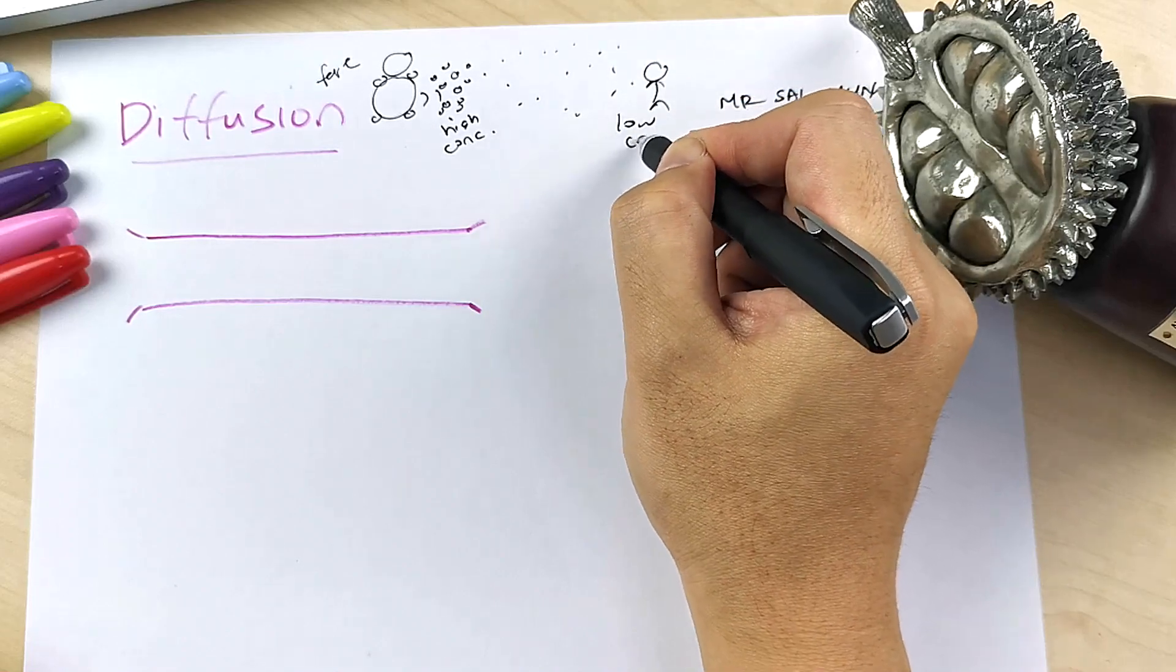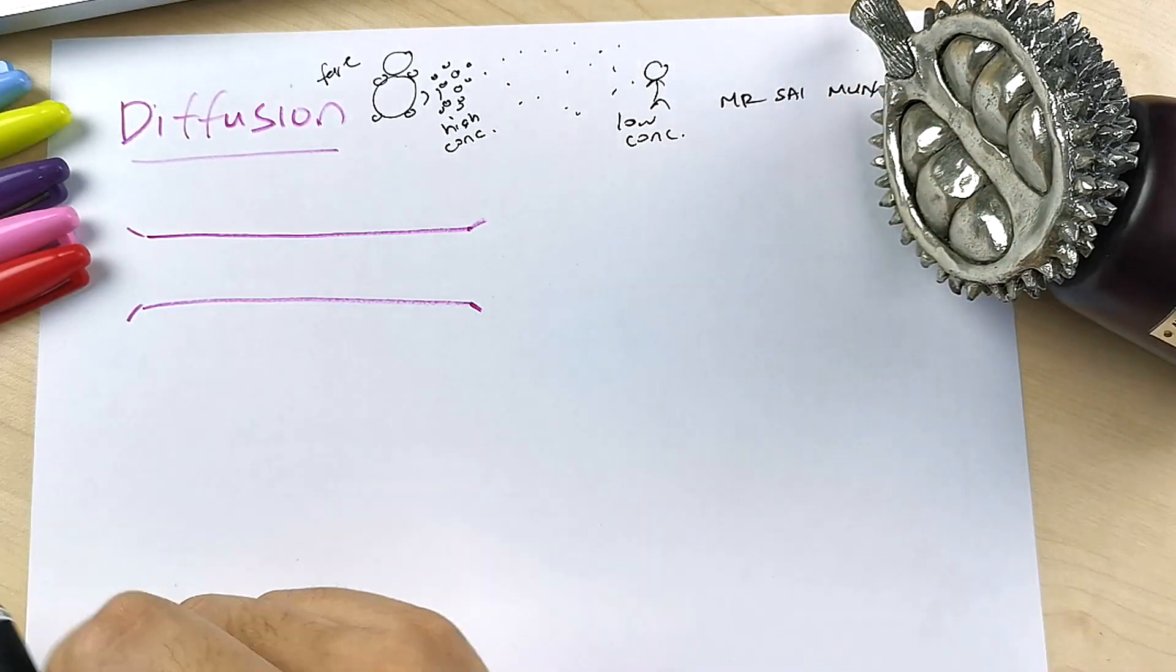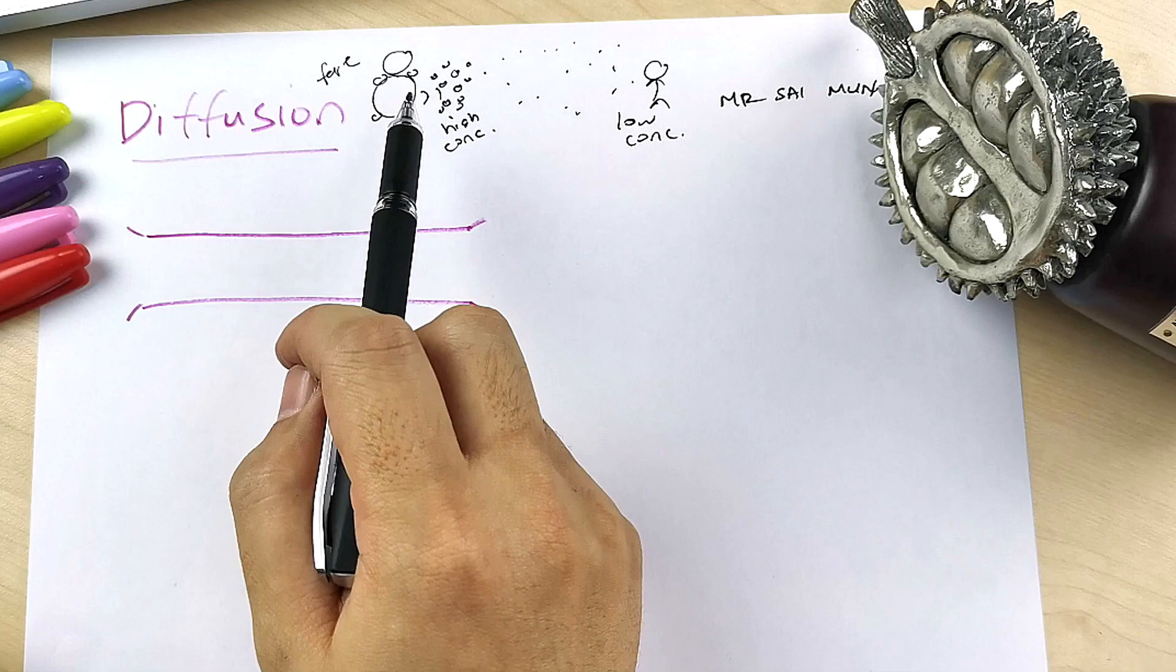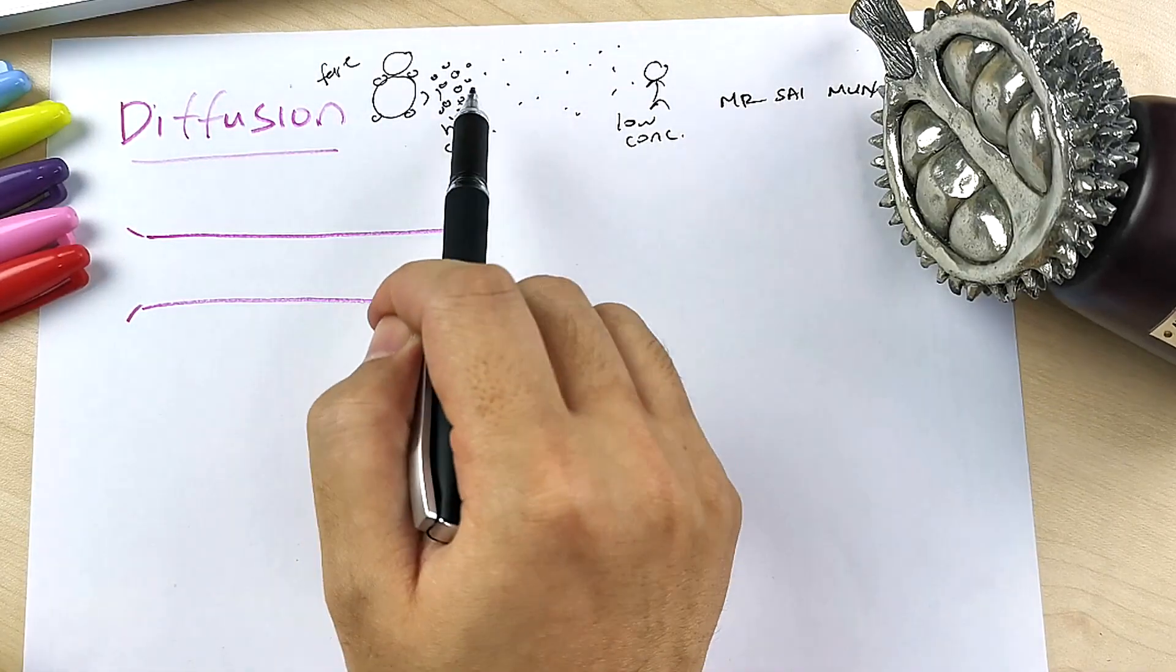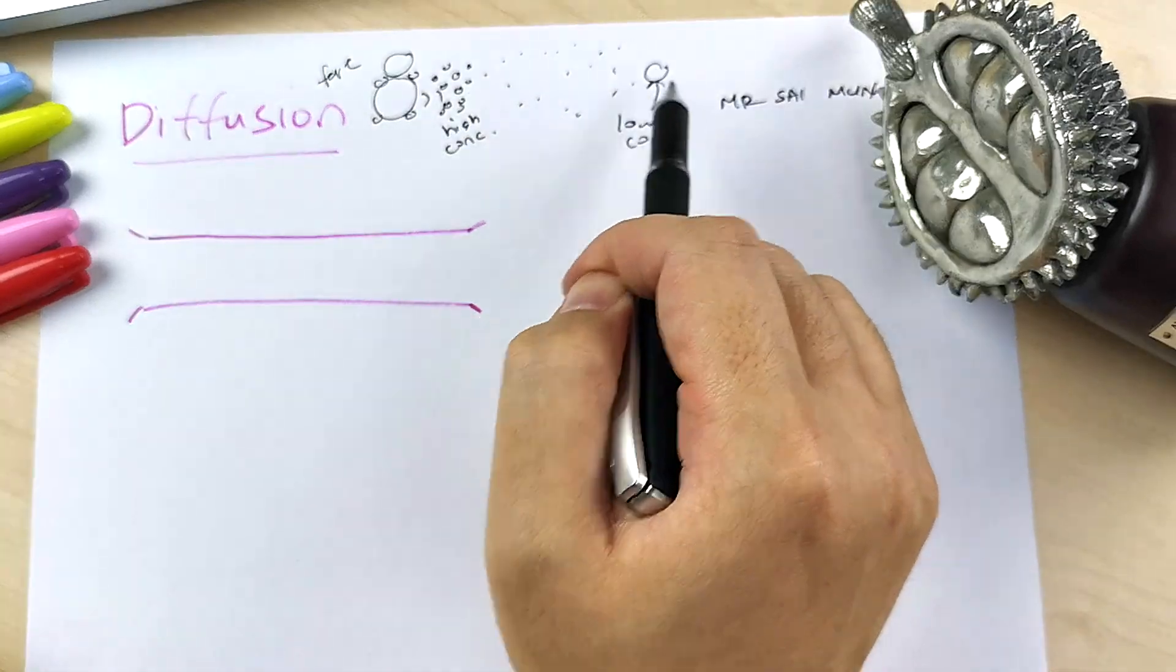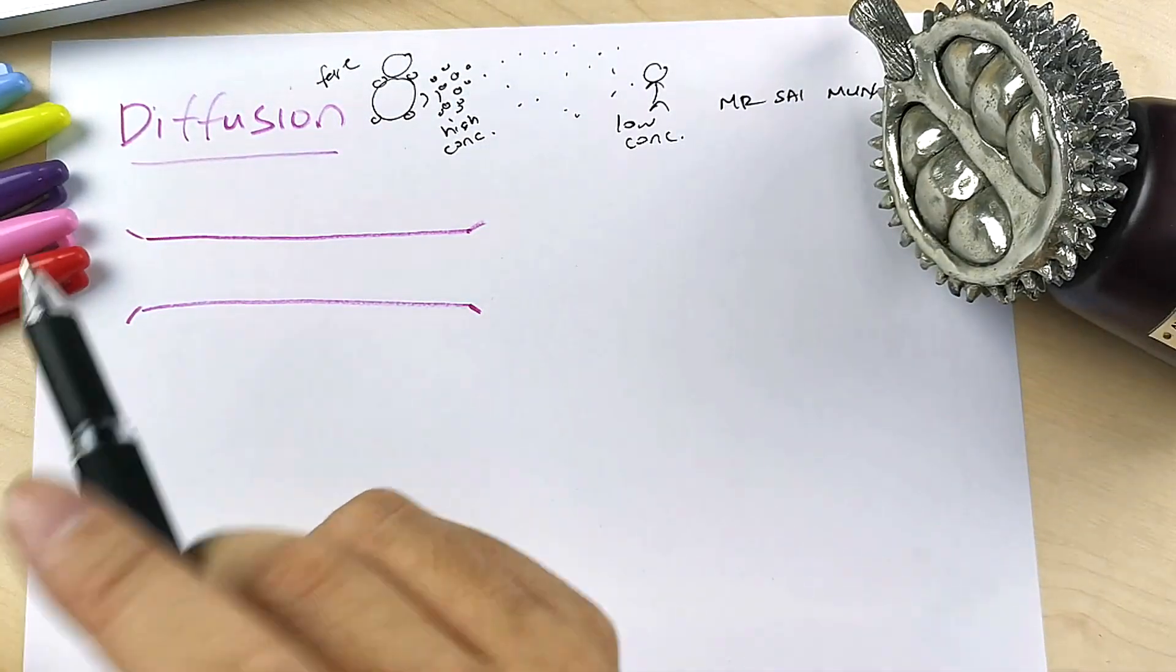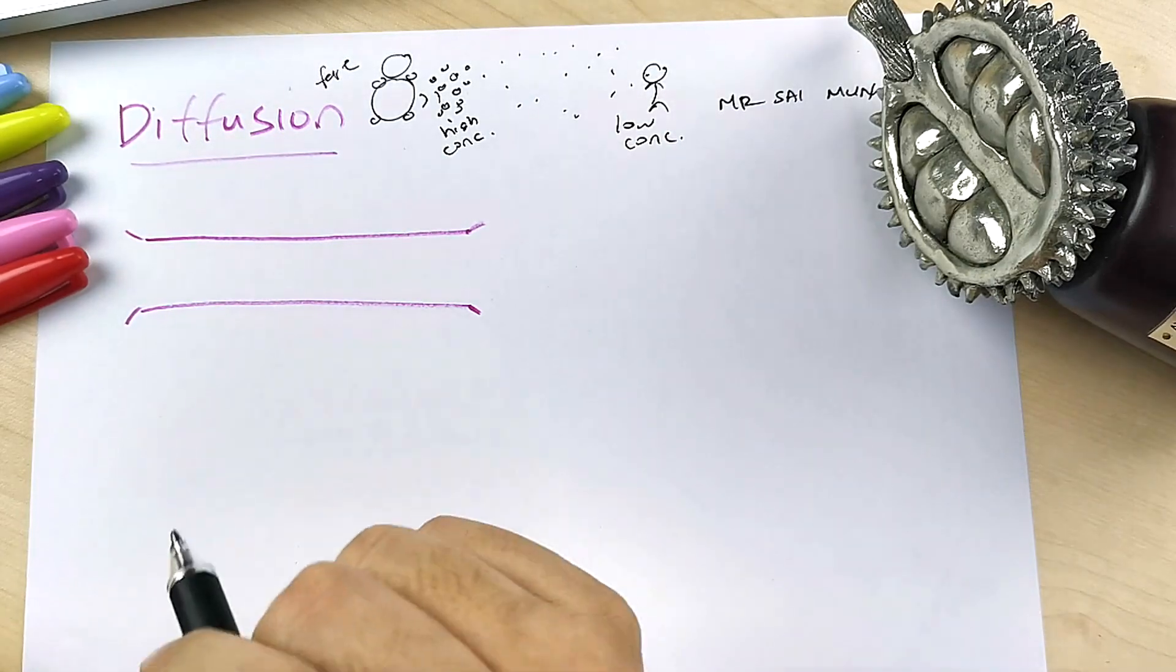Whenever you know diffusion, it's particles moving from a region or area of high concentration to a region or area with lower concentration. And then that's why you can smell the fart. So now, back to the more serious thing.